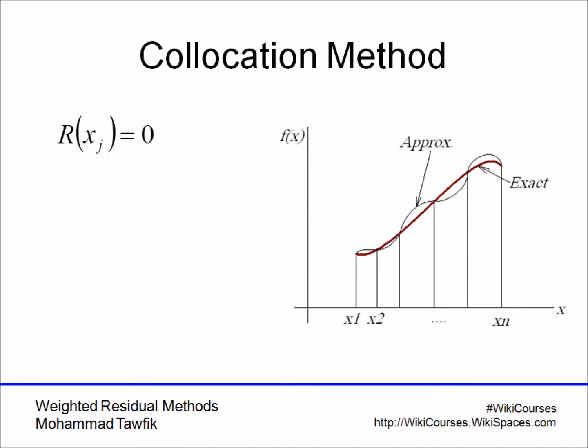Now, these points are going to be called R of X_J, where X_J is some internal point. Remember that the approximate function satisfies the boundary conditions. The X_Js are any internal points. They cannot be any of the boundary points,